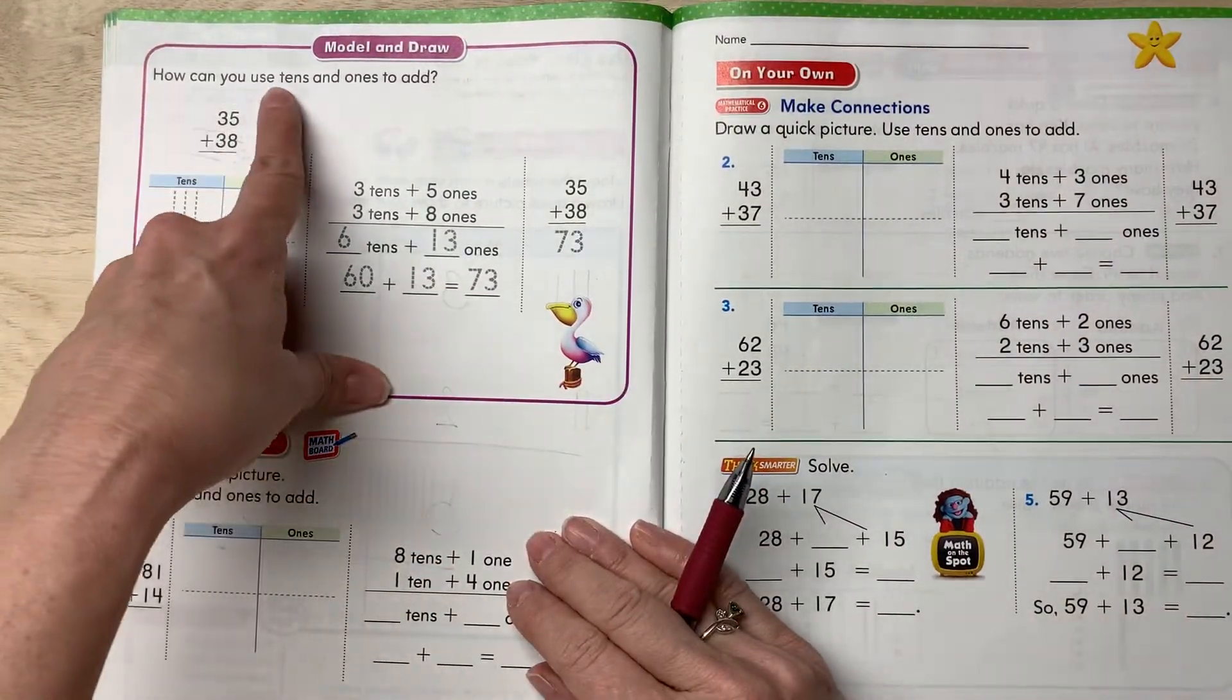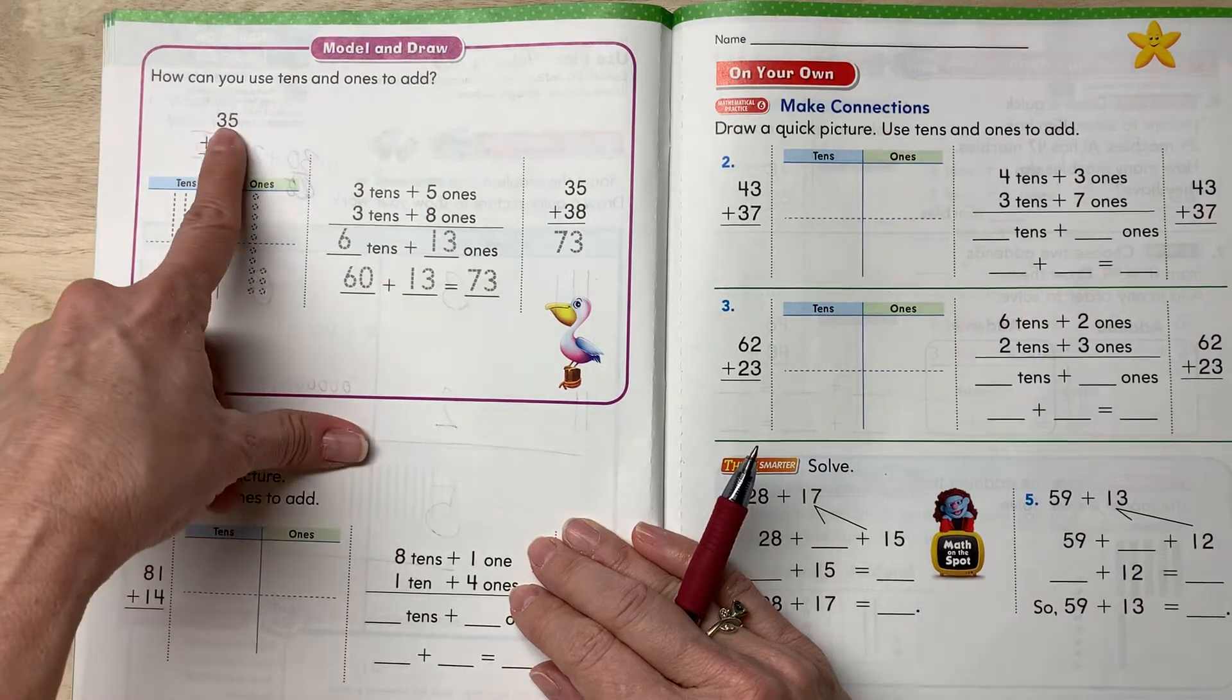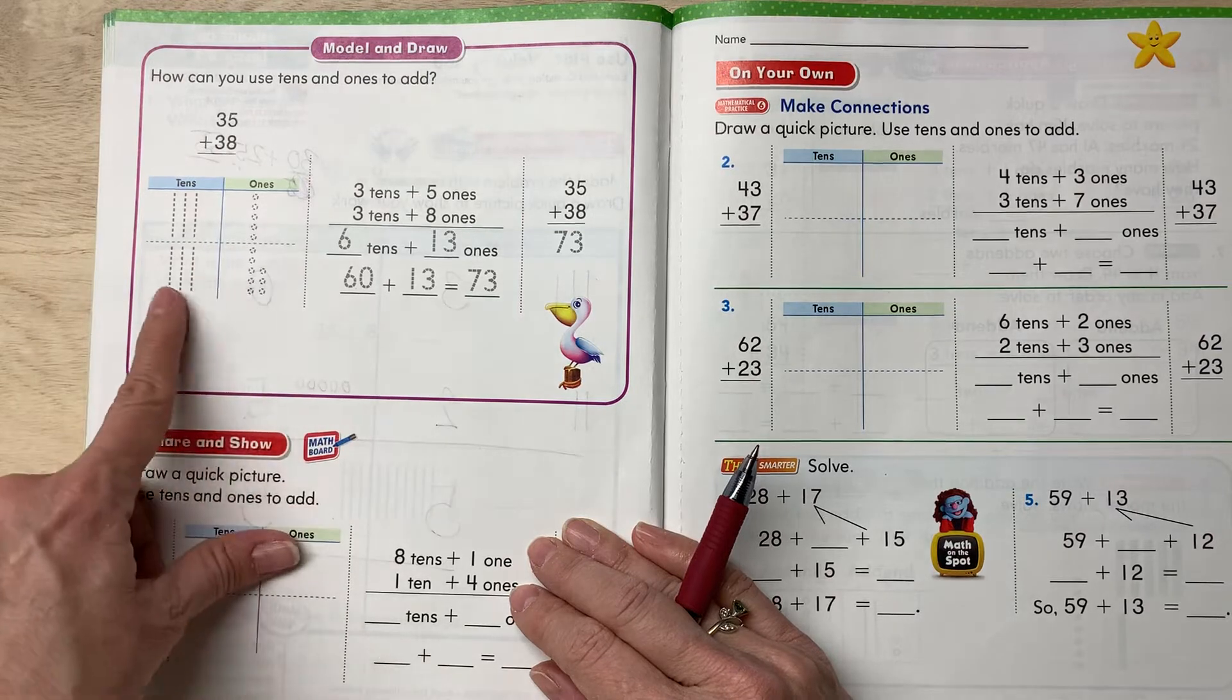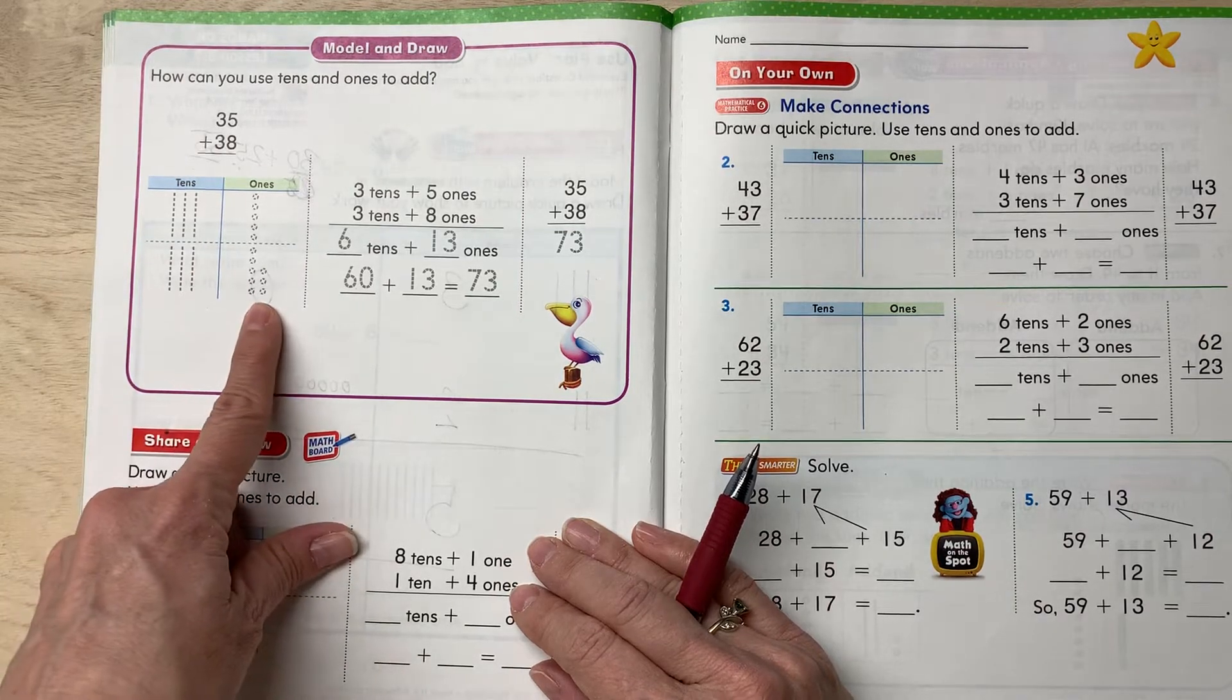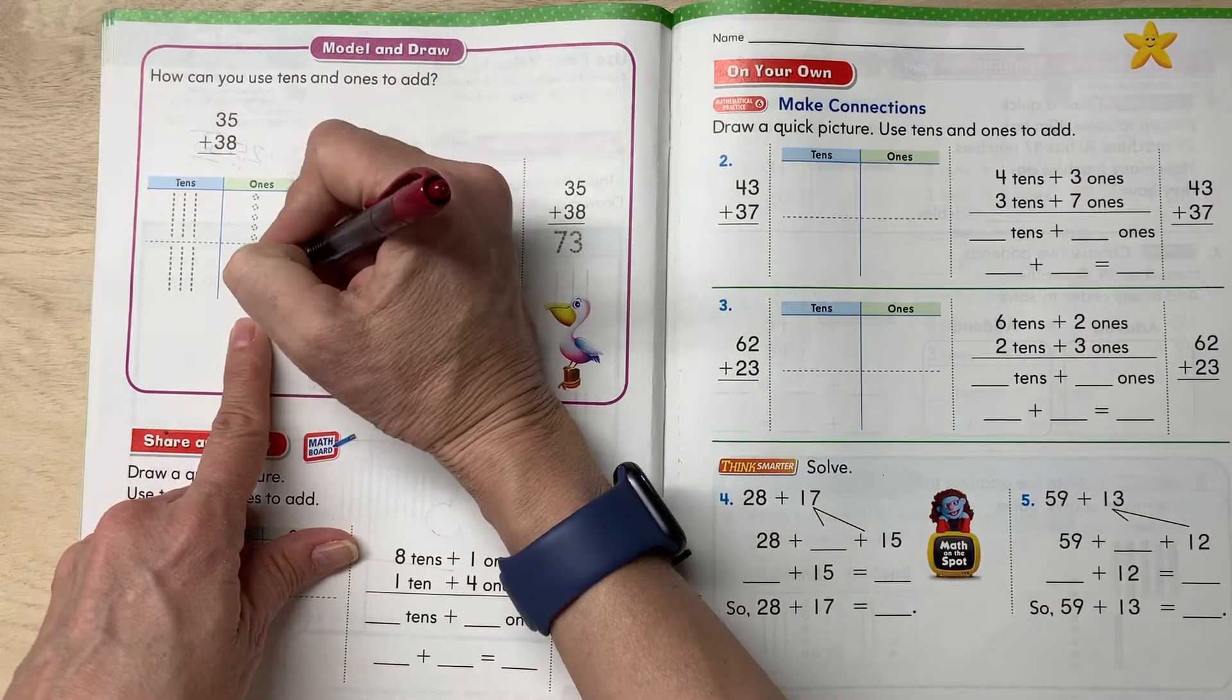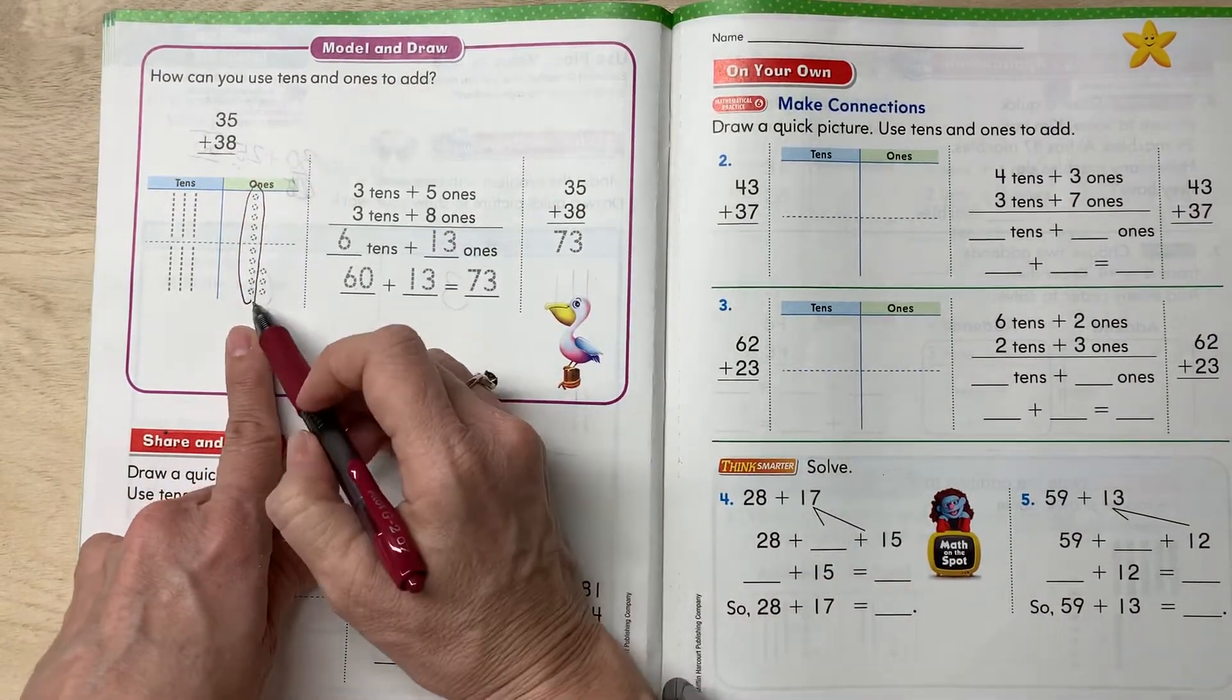All right, so here we go. How can you use tens and ones to add? So here's the pictures like what we just did. Thirty-five is three tens and five ones. Thirty-eight is three tens and eight ones. So what you've had to do here is you've had to make a new ten. Here's a new ten.